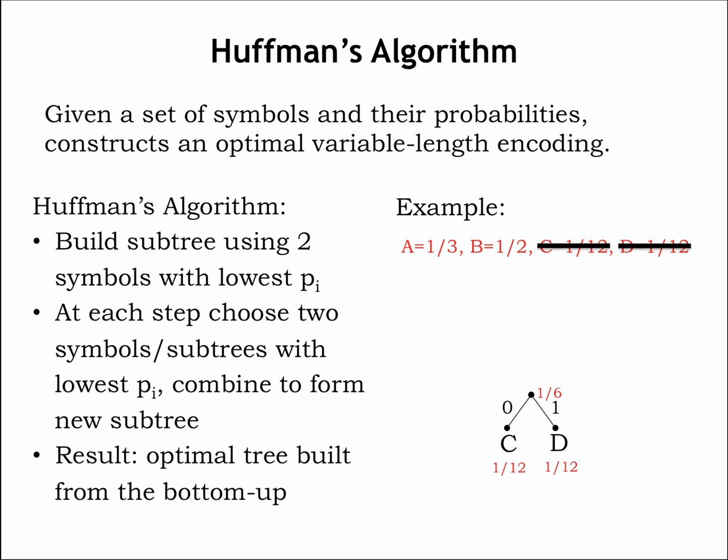Now continue, at each step choosing the two symbols and/or subtrees with the lowest probabilities, combining the choices into a new subtree.